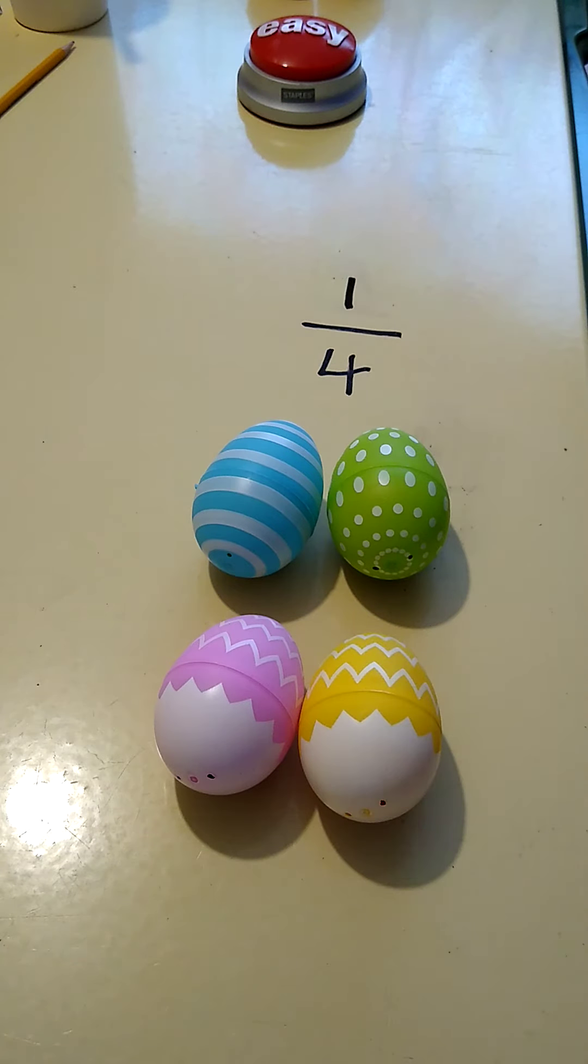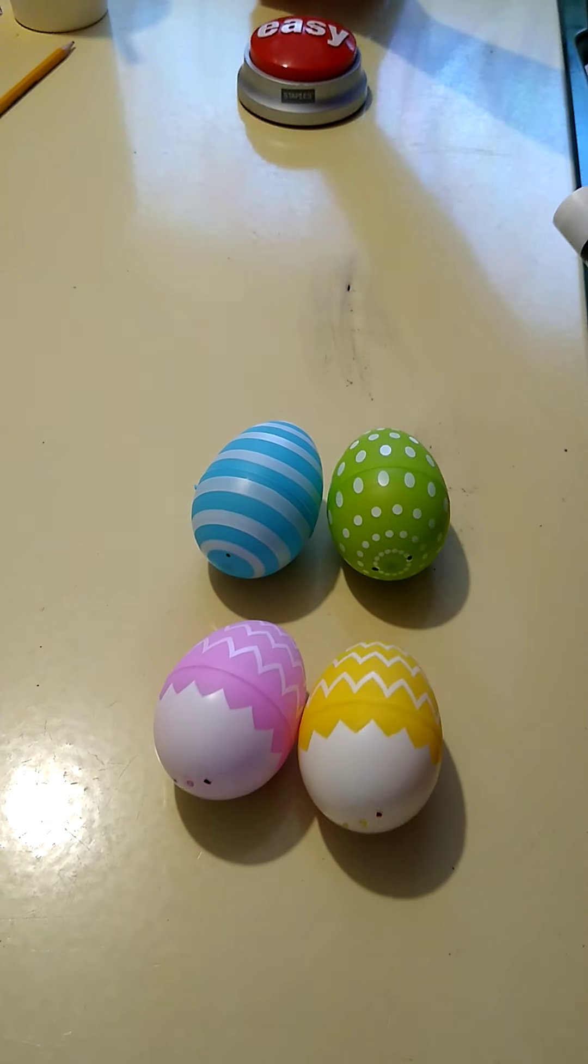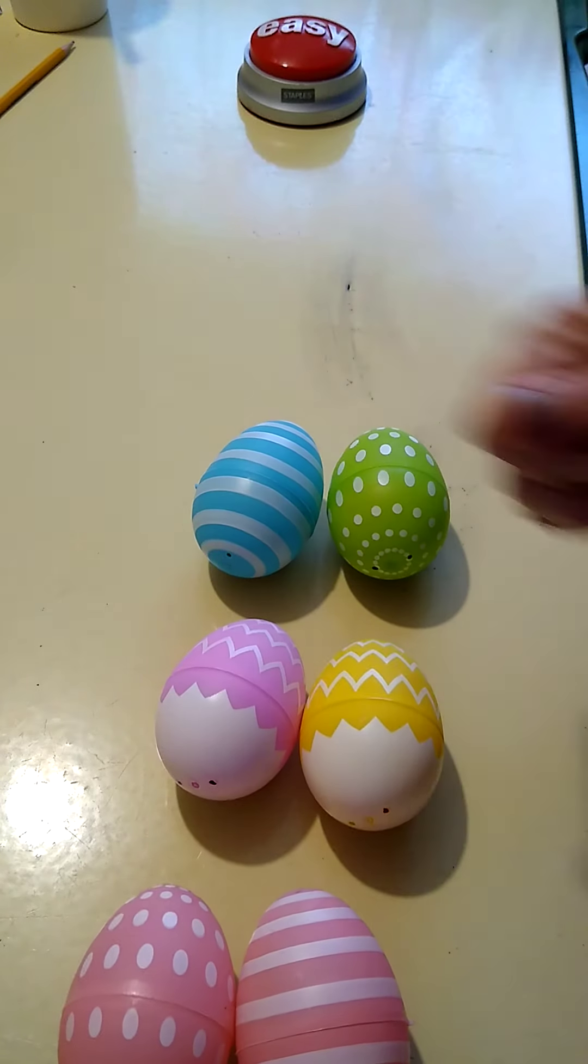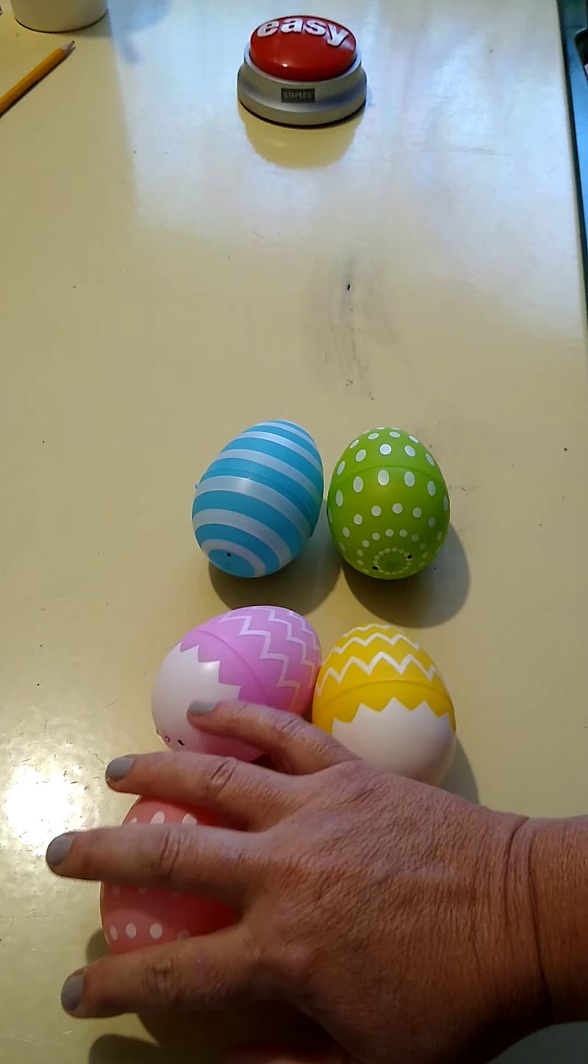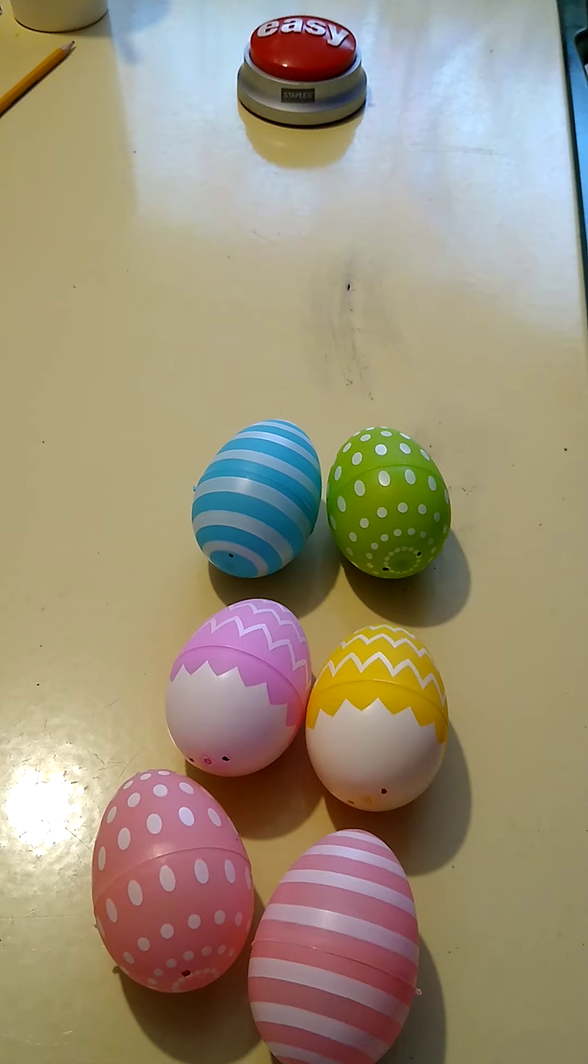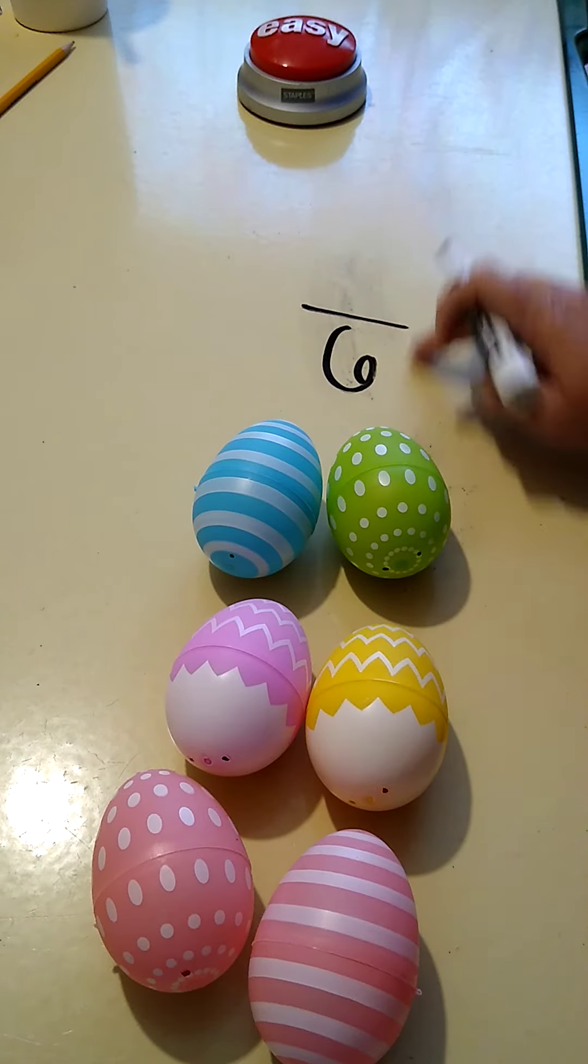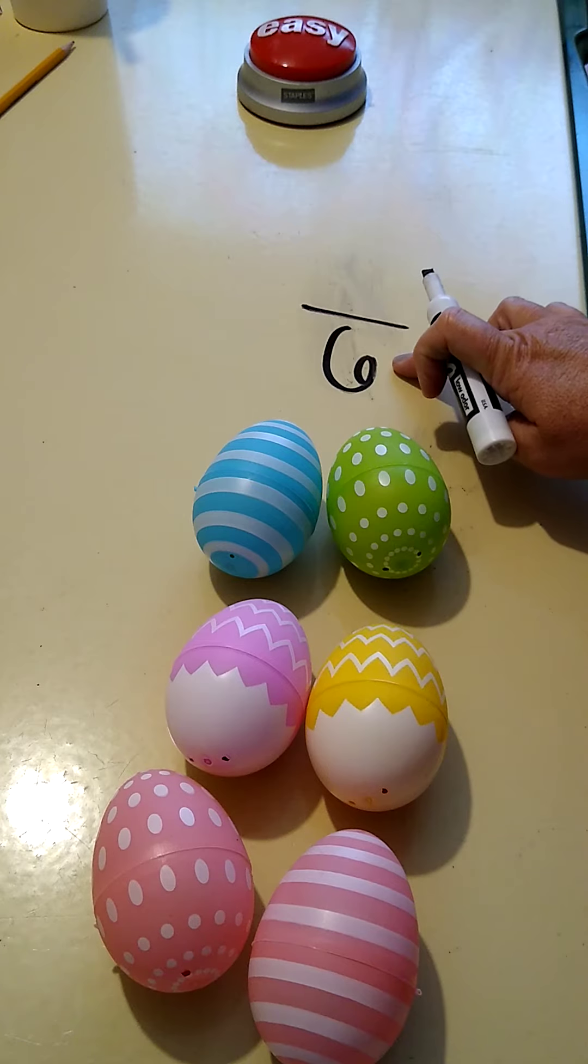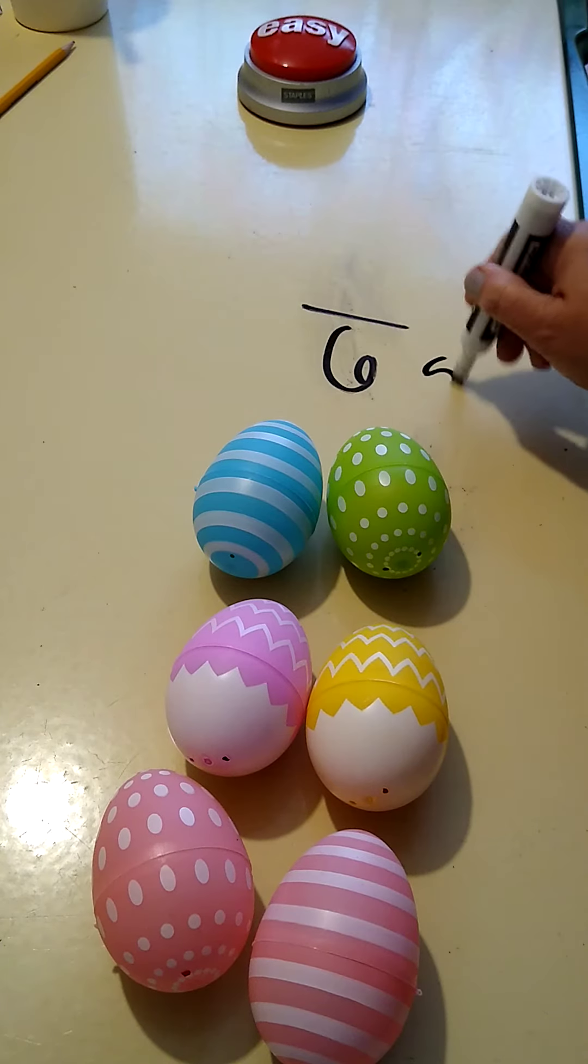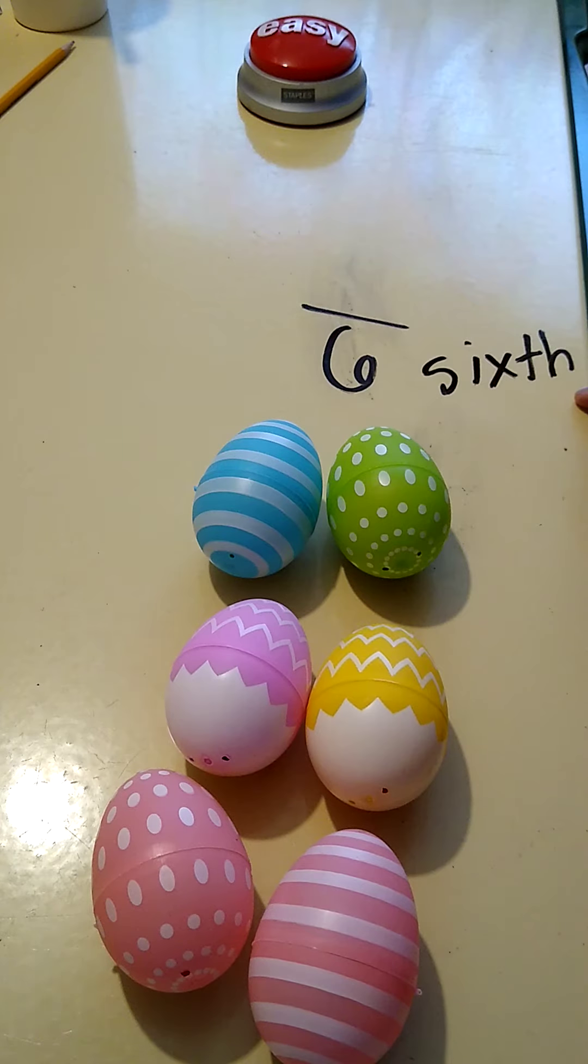So what if I brought in two more eggs? Now I have two, four, six eggs here in my little Easter basket. The fractions that I'm working with now are sixths. Six is my denominator, so I say S-I-X and then add 'th' on the end - sixths.